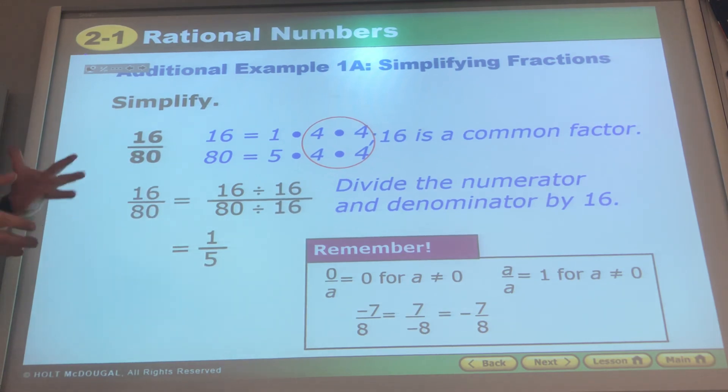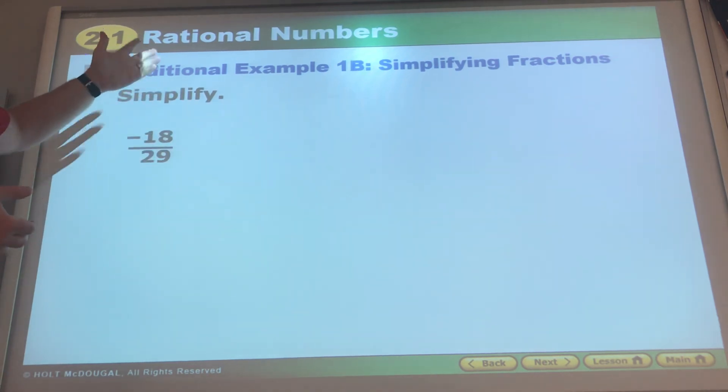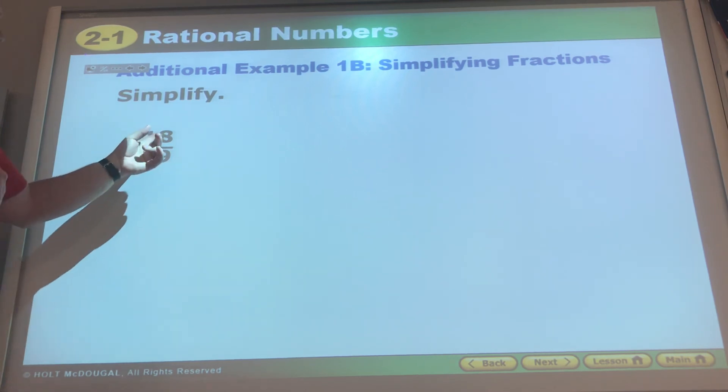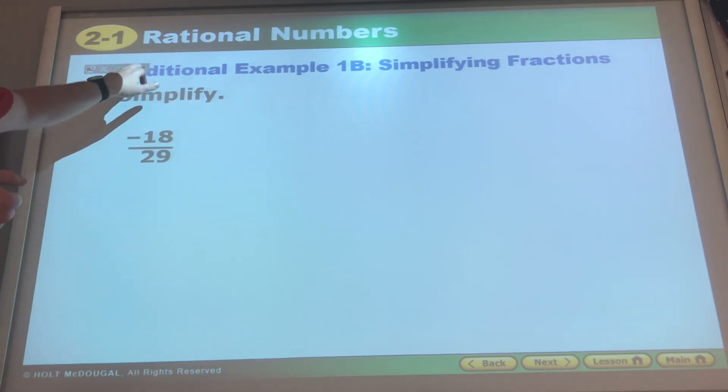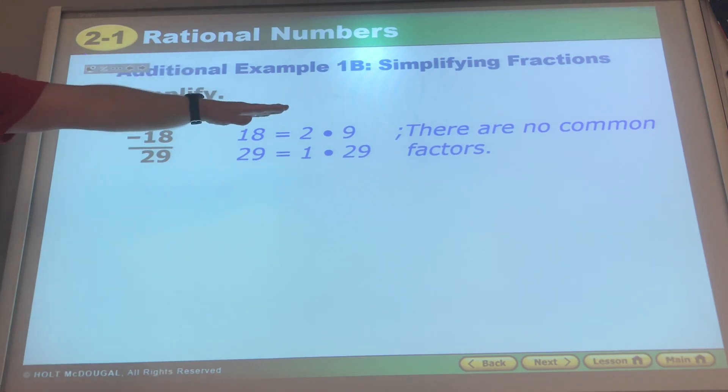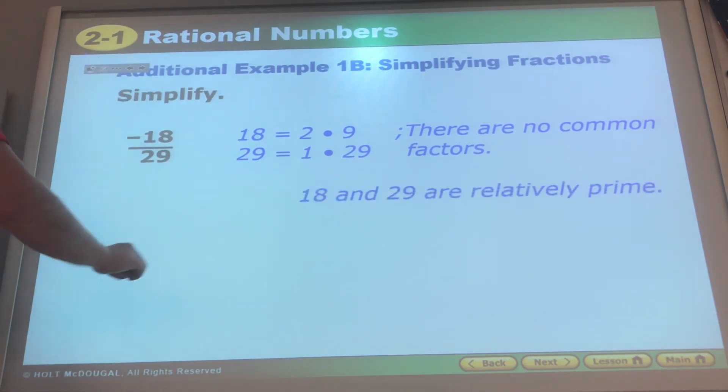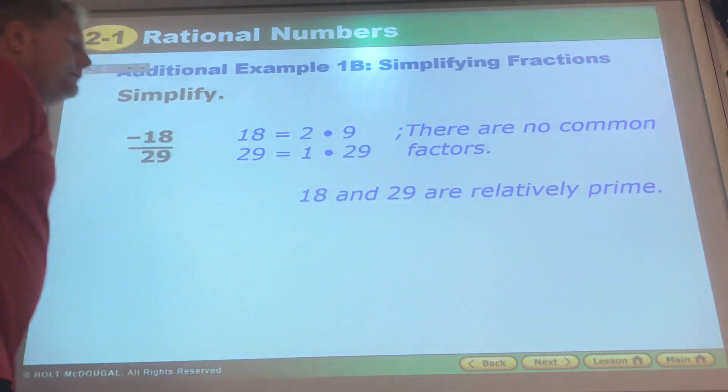Here we have -18 and 29. I know 2 will go into that, it won't go into this. I know that 29 is the only thing that will go into 29 and 29 won't go into 18. We write out some factors, we think about it, there are no common factors. That simply means these two numbers are relatively prime, they cannot be reduced.